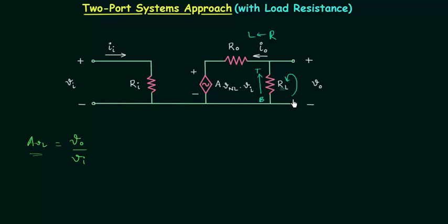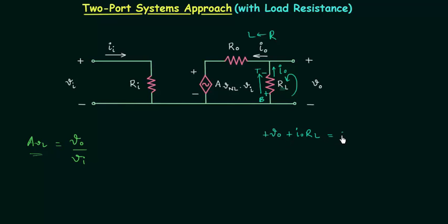I will move in this direction. So we have plus of Vo, and we have Io current in this branch. You can see we are moving in the opposite direction to the direction of current, so we will take plus of Io·RL — this is the drop across this resistance. This is the negative terminal and this is the positive terminal. Considering it as a potential drop equal to Io·RL, and as we are moving in this direction we will have a positive sign, equal to zero.